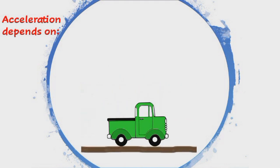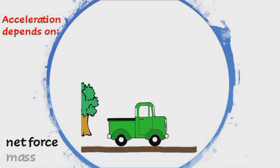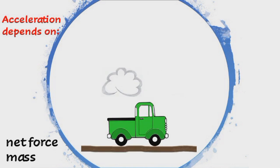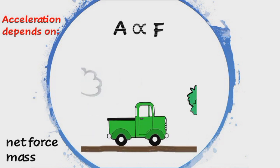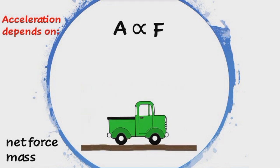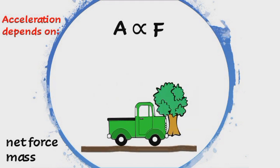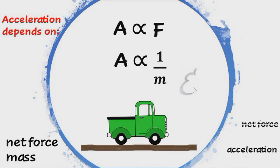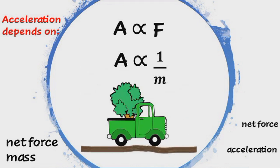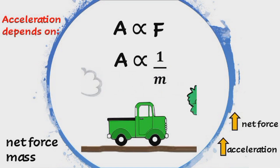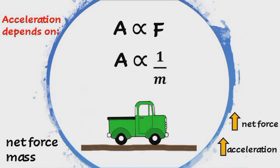The second law states that the acceleration of an object is dependent upon two variables: the net force acting upon the object and the mass of the object. The acceleration of an object depends directly upon the net force and inversely upon the mass. As the net force increases, the object's acceleration will also increase.